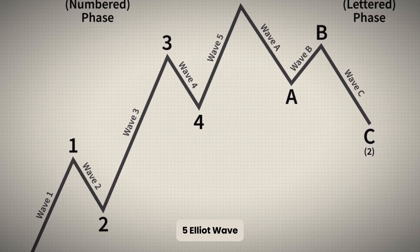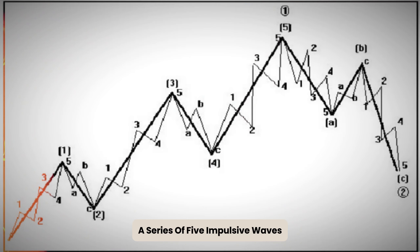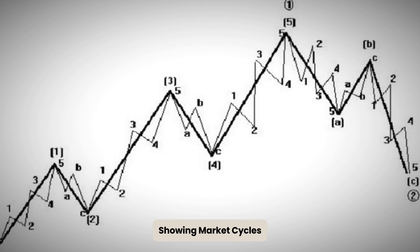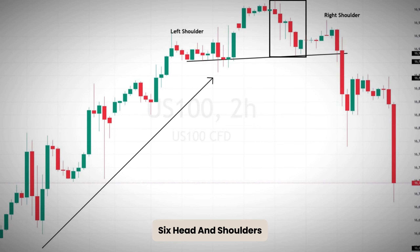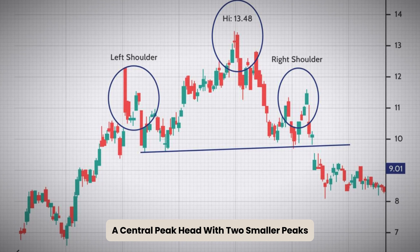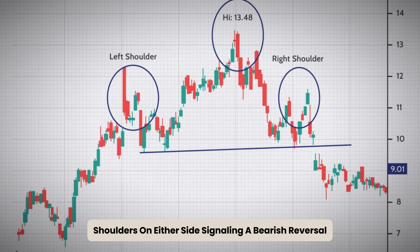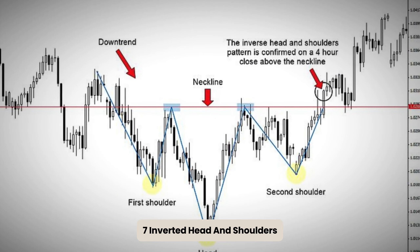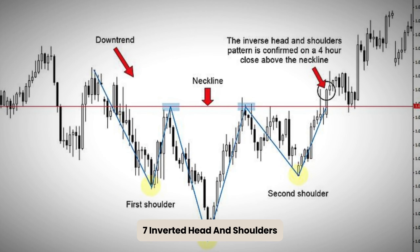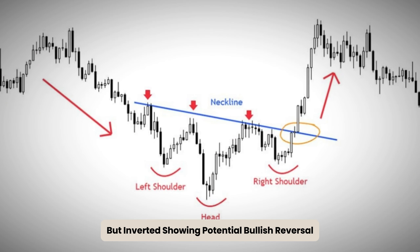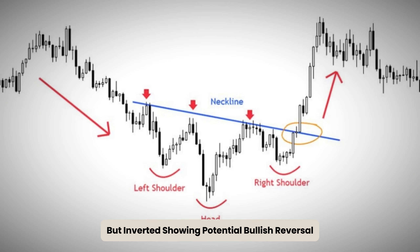5. Elliott Wave: A series of five impulsive waves followed by three corrective waves, showing market cycles. 6. Head and Shoulders: A central peak — the head — with two smaller peaks, the shoulders, on either side, signaling a bearish reversal. 7. Inverted Head and Shoulders: Similar to head and shoulders but inverted, showing a potential bullish reversal.